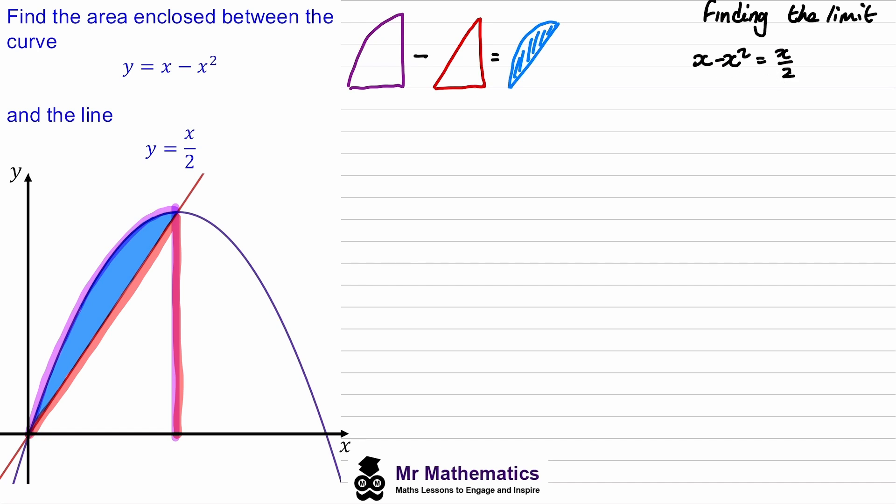We'll multiply both sides by 2 and then we'll move this negative 2x squared to the right hand side with this 2x. So we get 2x squared minus x will equal 0, and we can factorize this.